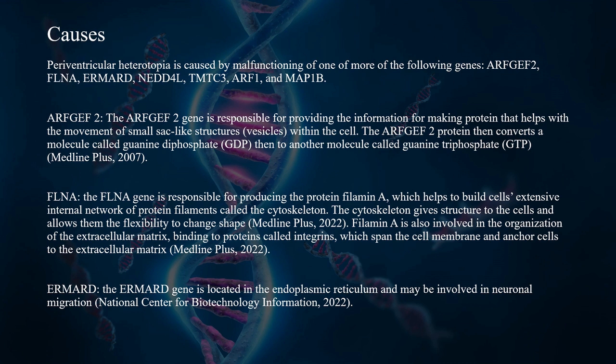The FLNA gene is responsible for producing the protein filamin A, which helps to build cells' extensive internal network of protein filaments called the cytoskeleton. The cytoskeleton gives structure to the cells and allows them the flexibility to change shape. Filamin A is also involved in the organization of the extracellular matrix, binding to proteins called integrins, which span the cell membrane and anchor cells to the extracellular matrix.